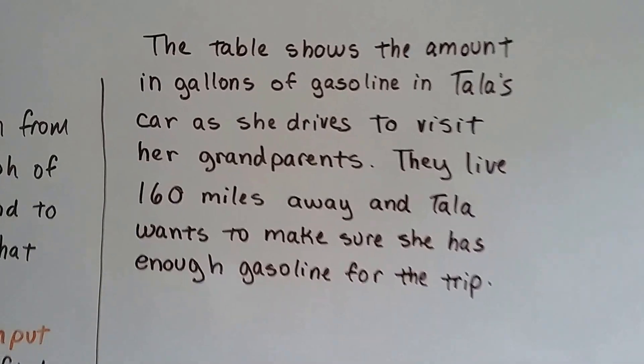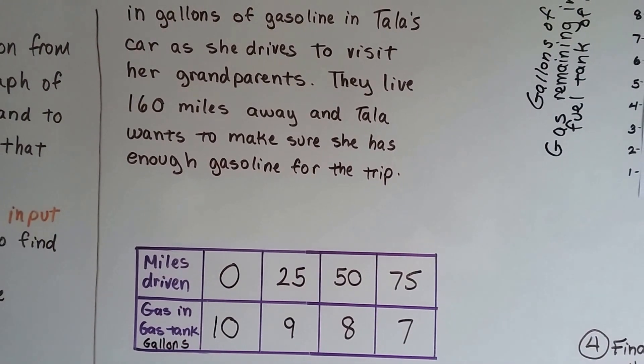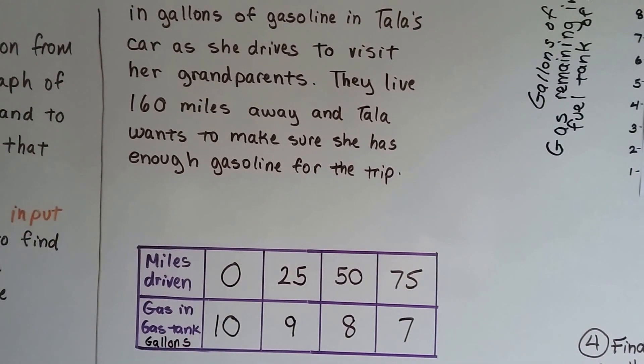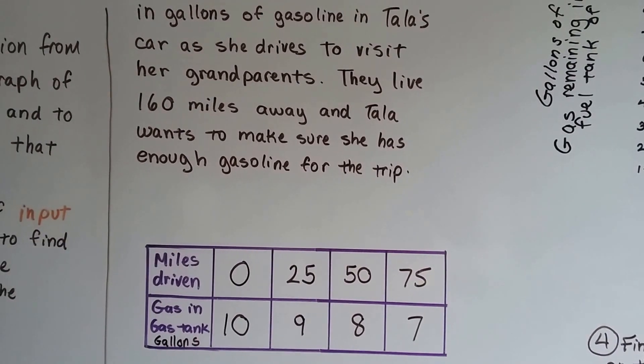In this video, we're going to use a table and a graph. This table shows the amount of gallons of gasoline in Tala's car as she drives to visit her grandparents. They live 160 miles away and Tala wants to make sure she has enough gasoline for the trip.